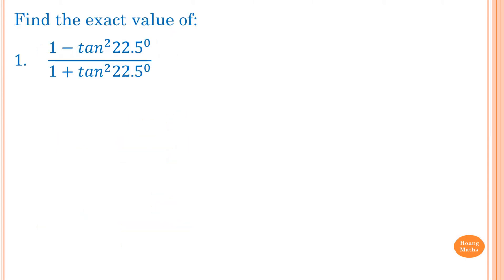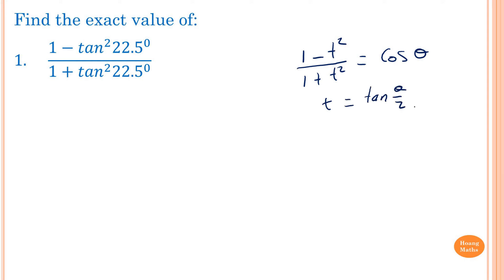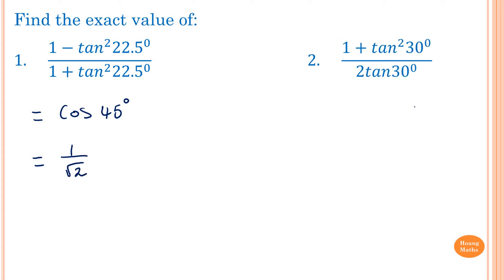Example 1: Find the exact value of (1 − tan²(22.5°)) / (1 + tan²(22.5°)). We know that (1−t²)/(1+t²) = cos(θ), where t = tan(θ/2). Since θ/2 = 22.5°, then θ = 45°. So this equals cos(45°) = 1/√2.